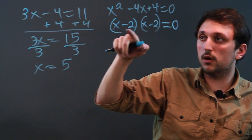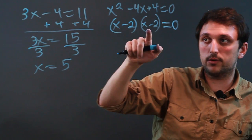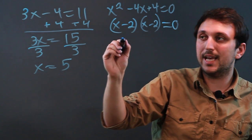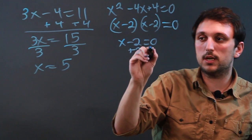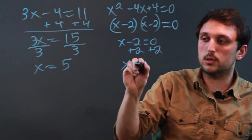And if all that equals 0, then we know x minus 2 equals 0, and this is the same. So if x minus 2 equals 0, then we add 2 to each side, and x equals 2.